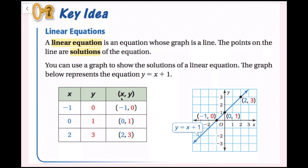I have an input-output table, and in this column I have the corresponding ordered pair to this x-y table. If I plug in negative 1 for x, I get negative 1 plus 1, which is 0, and that's my y value. That corresponding point is negative 1 comma 0. For x equals 0, the x term disappears and I'm left with 1, so that ordered pair is 0 comma 1. For x equals 2, I get 2 plus 1, which is 3, giving ordered pair 2 comma 3. All of these points fit on the same line, which represents all solutions of this equation.